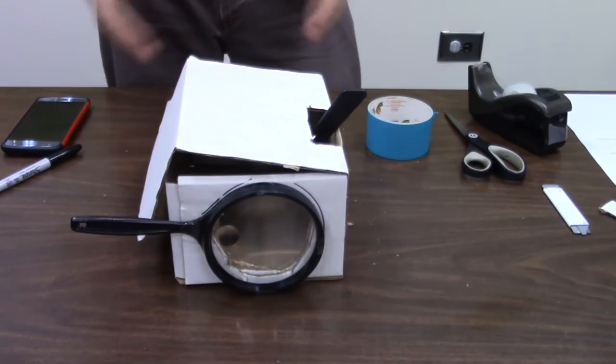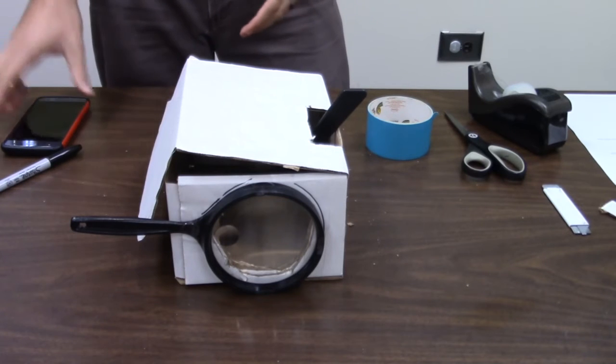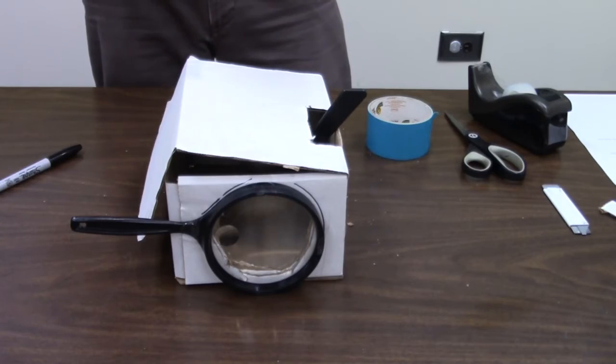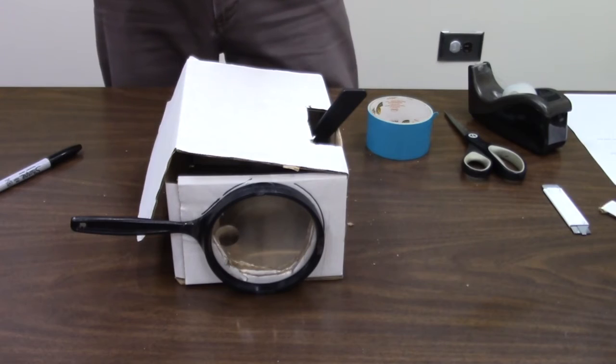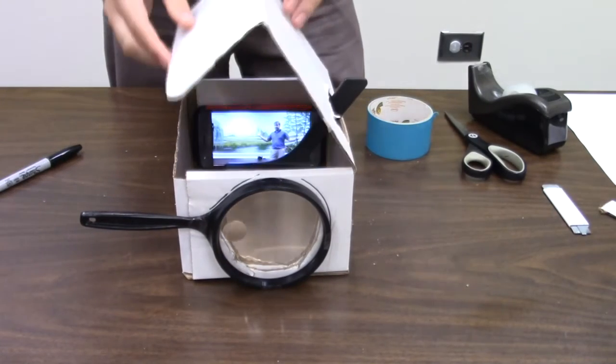And when the lid is closed, we have that handle sticking out. Now, once you've got all that made, you're actually pretty well set up. The last thing you're going to do is find a video on your phone, like our Lee County Library Science Club videos. You're going to start playing it. You're going to put it inside the box, leaning up against the back.